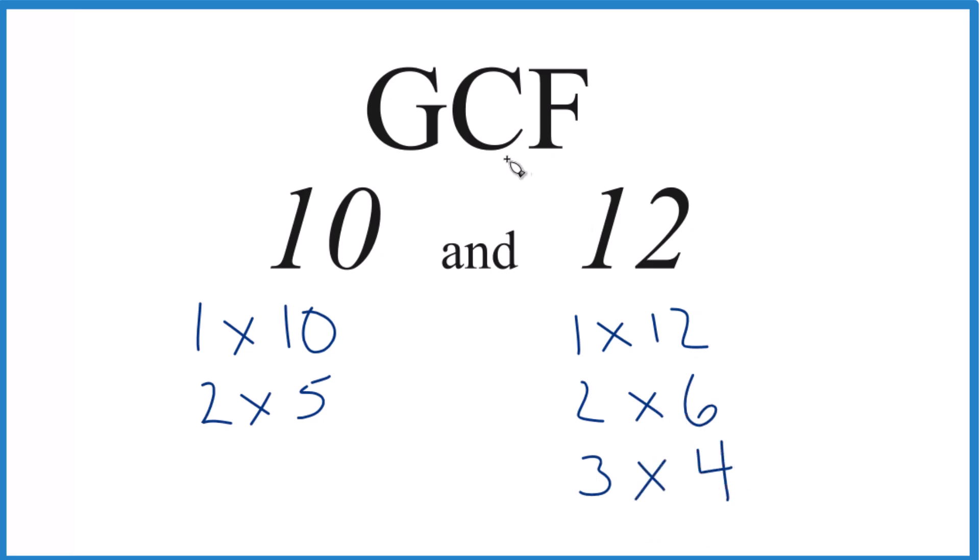So let's see what we have in common. 1, they both have a common factor of 1. 2, 2 goes into 10 and 12, and then that looks like it. So 2 is the greatest common factor for 10 and 12.